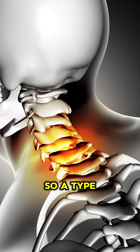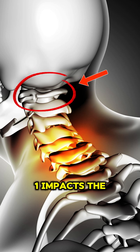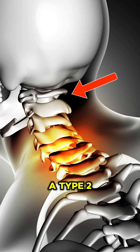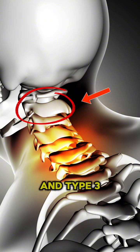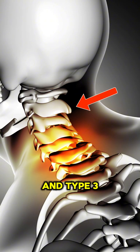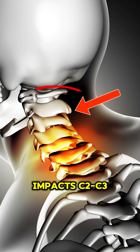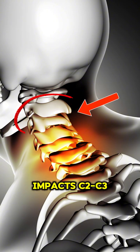A type 1 impacts the C0-C1. A type 2 instability impacts the C1-C2. And type 3 impacts C2-C3.